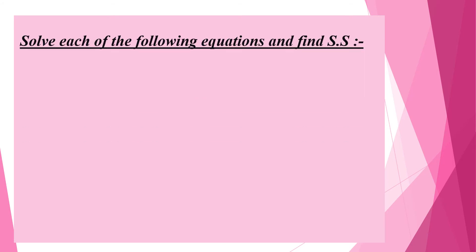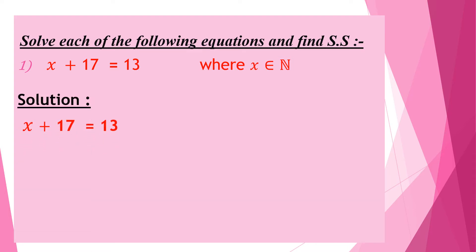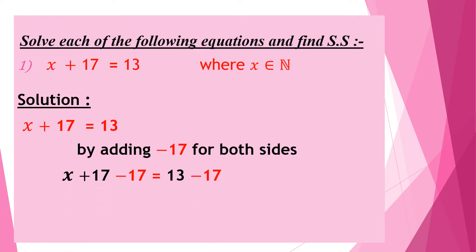Solve each of the following equations and find the solution set. If x plus 17 equals 13, where x belongs to the natural numbers. As we studied before, to find the value of x we must get rid of the number added or subtracted from this variable. So we add the additive inverse of 17 to both sides: x plus 17 minus 17 equals 13 minus 17, which gives x equals negative 4.